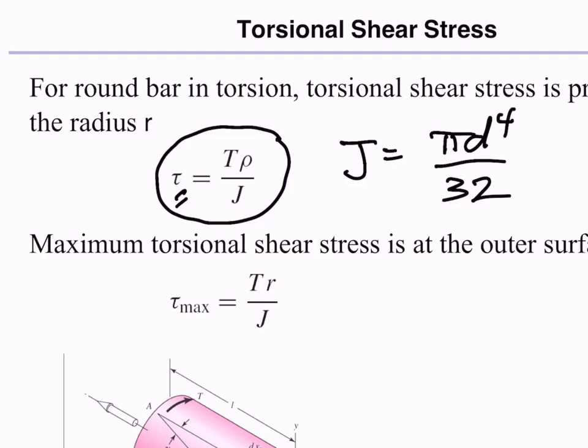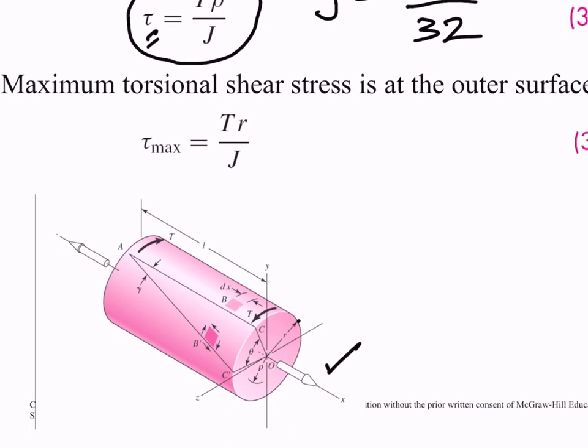Now, it's interesting to note that the maximum occurs at the outermost boundary. The maximum shear stress occurs at the outermost boundary and is given by this equation for r equal to the radius of the shaft.